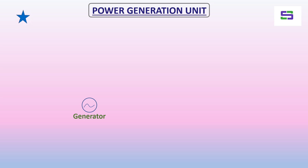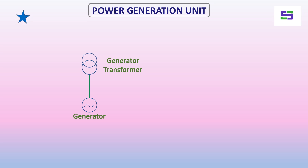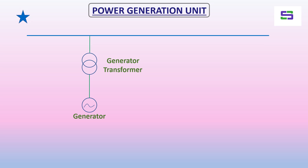There will be one or more generator units and a generator transformer. The generator will generate power at a certain voltage level — maybe 11 kV or 22 kV. This voltage needs to be stepped up to EHV level, that means 132 kV, 220 kV, or 400 kV, to evacuate the power towards the power grid.